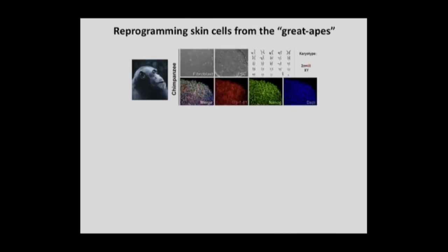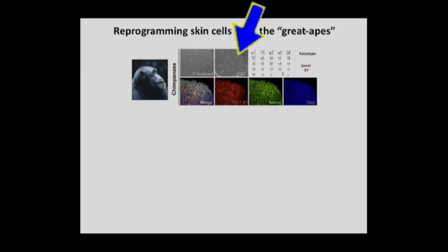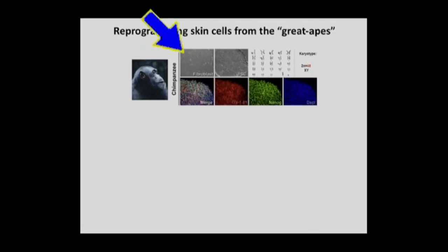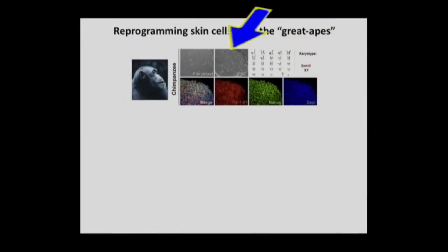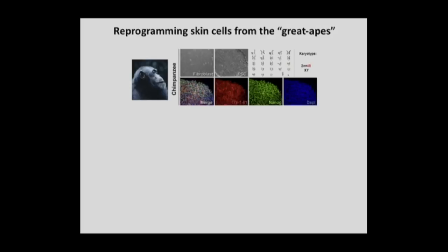To induce pluripotent stem cells, we start with fibroblasts — skin cells — and add the Yamanaka factors. After a couple of days, the morphology and behavior of the cells change: fibroblasts are elongated and grow in isolation, but when moved with pluripotent factors into human embryonic stem cell culture conditions, they get together and resemble cells from the human blastocyst. They start to express pluripotent markers such as TRA-1-89 and NANOG, confirmed by immunostaining. We also confirmed no gross genomic abnormality by G-banding karyotype, checking for the 48 chromosomes in chimps and bonobos versus 46 in humans.